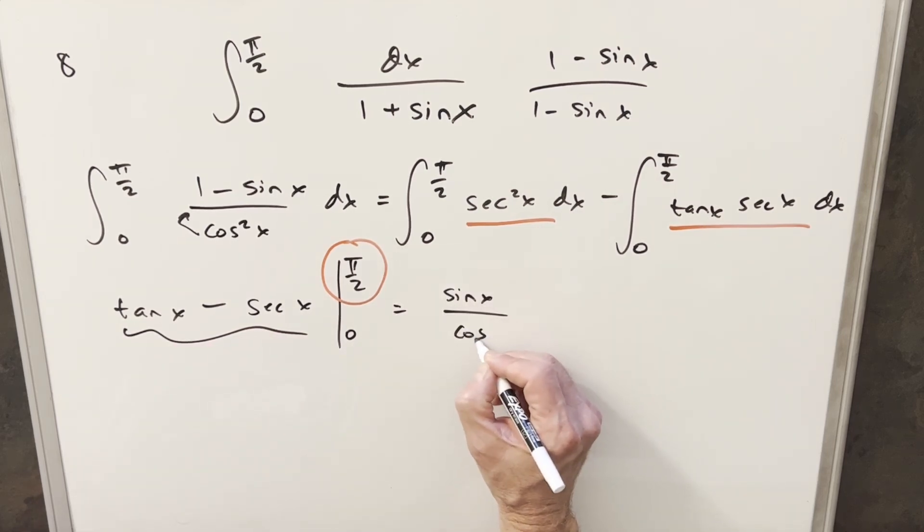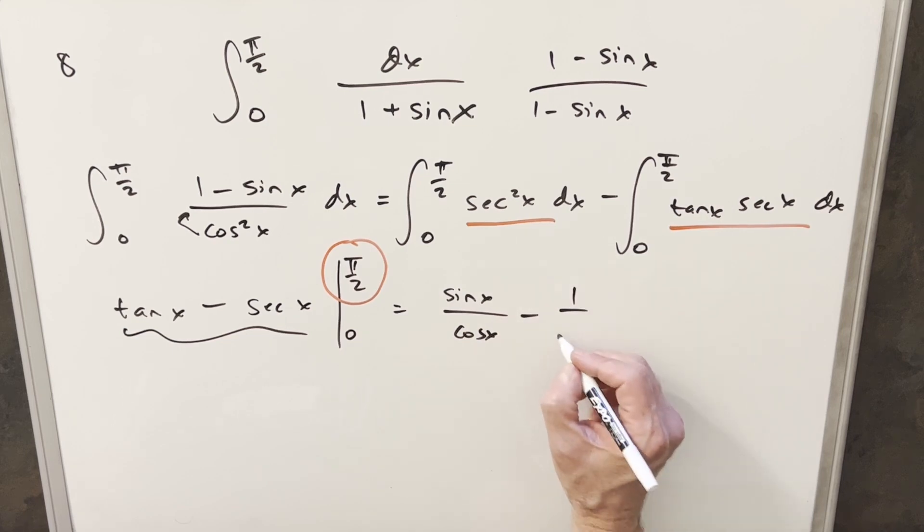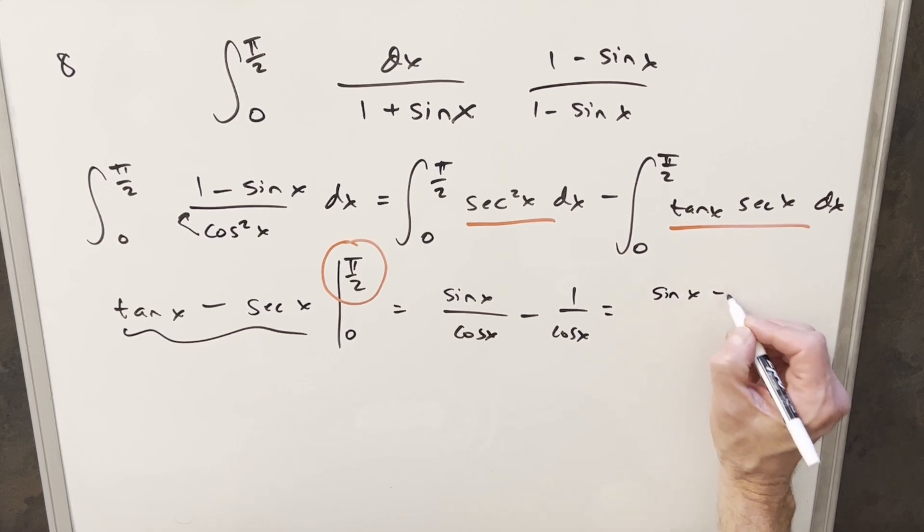So I'll write this as sine x over cosine x minus 1 over cosine x. And then of course, we have a common denominator. So we can write this sine x minus 1 over cosine x.